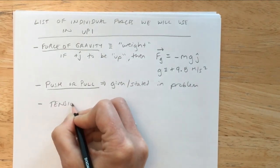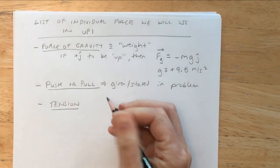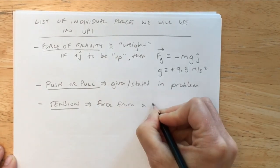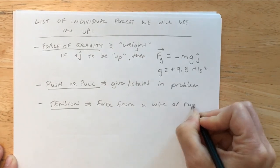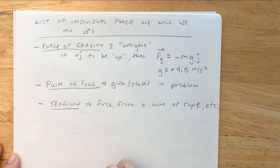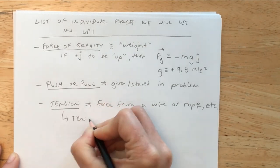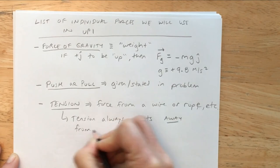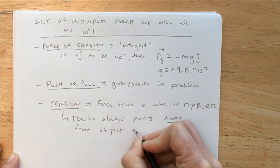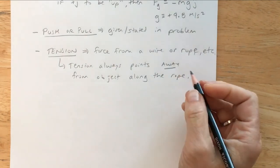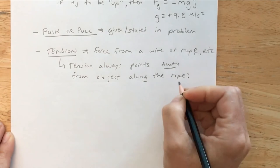Tension is another type of force. If there's a rope or a wire, we're going to have a force of tension — a force from a wire or rope. A key thing to remember: a rope always pulls on an object. Tension always points away from the object along the rope. Keep this rule in mind when working with free body diagrams.